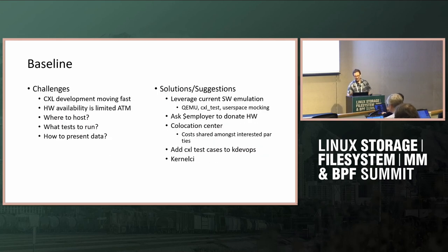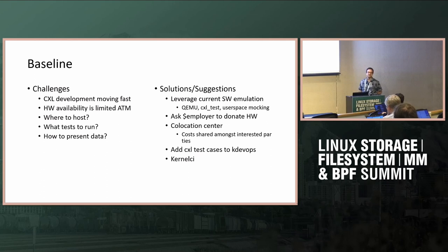The last thing — we're running out of time — is this super challenging baseline question, which we've briefly discussed. Internally, we've been trying to think of a baseline and haven't been good at it, because it changes so fast. What's in CXL, what's supported, the emulation of it — there's QEMU, there's CXL test, there was some user space tooling proposed. It's moving very fast and that makes it very hard to settle on what should be a baseline. We should leverage what's currently there.